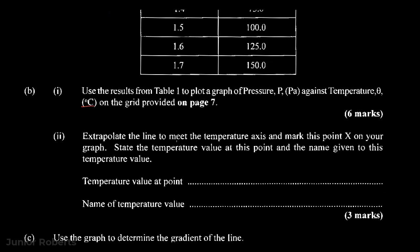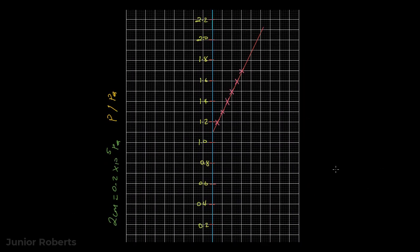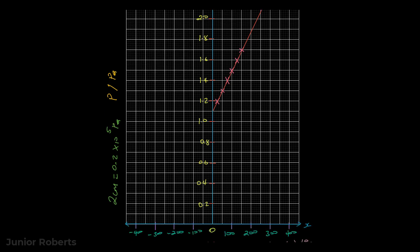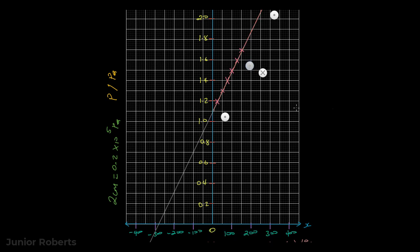Next it says we are to extrapolate the line to meet the temperature axis and mark this point X on the graph, then state the temperature value at that point and the name given to that temperature. We take the ruler and extend the line so that it meets the temperature axis, then place a large X at that intersection point.